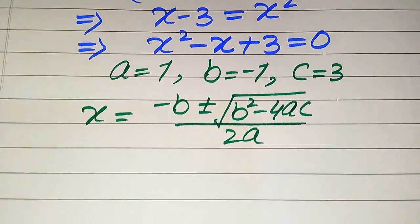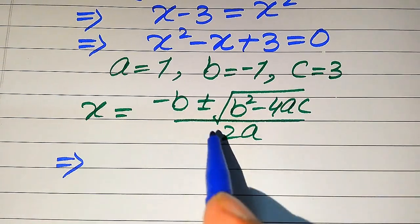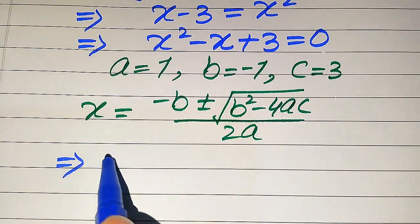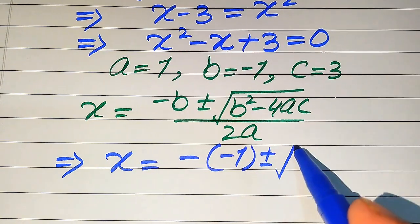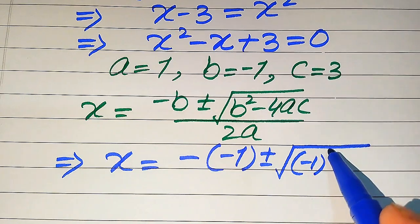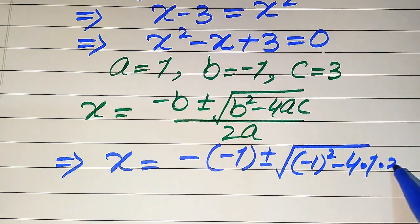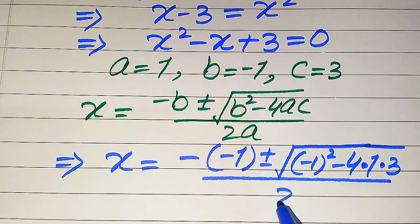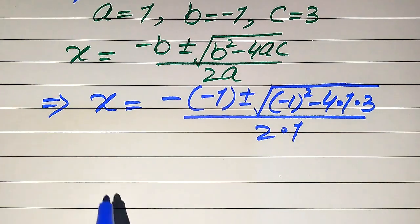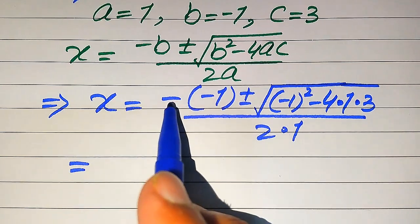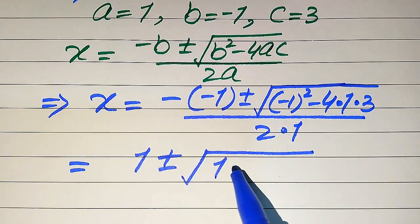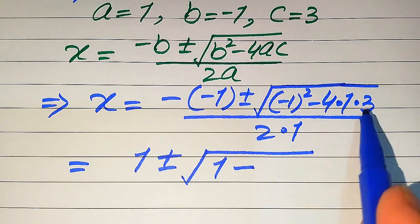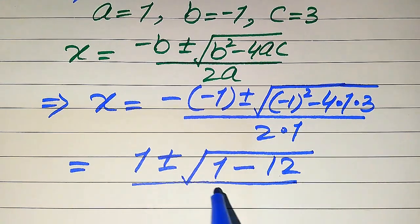In the next step, we substitute all values of a, b, and c into the formula. It becomes minus of minus 1, plus or minus square root of minus 1 squared minus 4 times 1 times 3, divided by 2 times 1. Simplifying: minus times minus gives plus 1, minus 1 squared becomes 1, and 4 times 3 becomes 12, divided by 2.